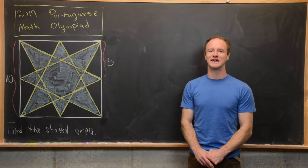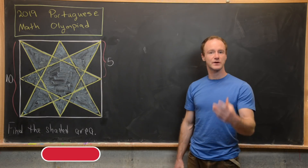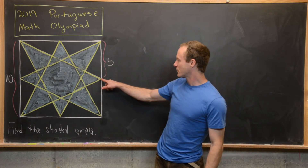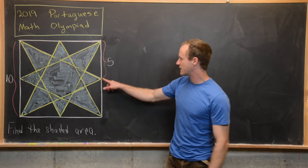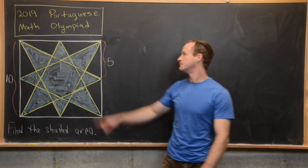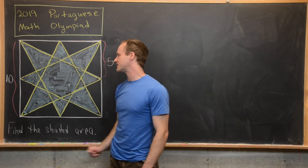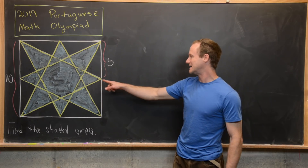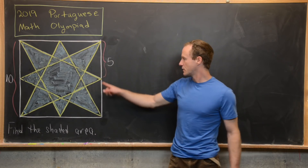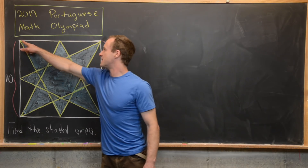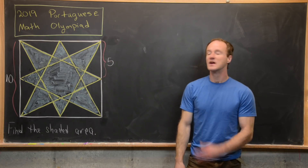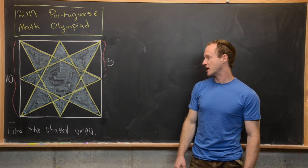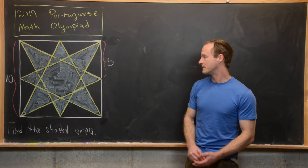Here we're going to look at a nice problem from the 2019 Portuguese Math Olympiad. We've got a square with side length 10, and at every midpoint of each side — five units from each corner — we're going to make a line segment to the opposite corners, creating a star shape. The goal is to find the shaded area, shown in blue.